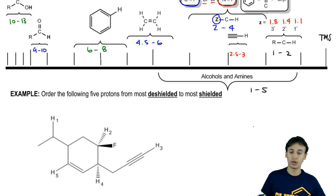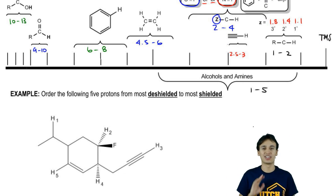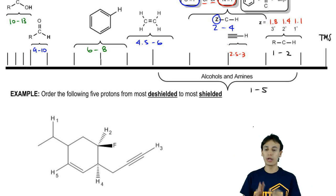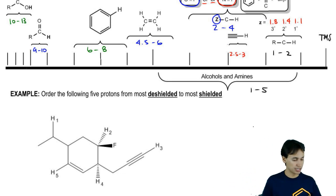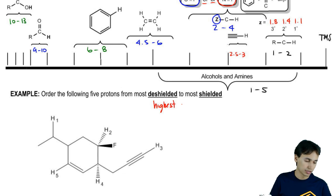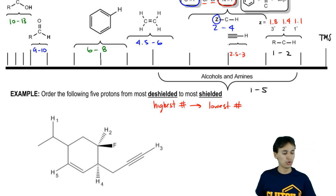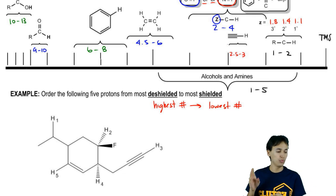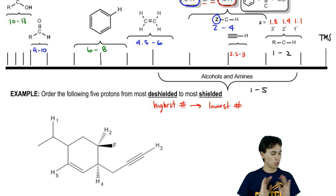Now we're going to do a practice problem. What I want you guys to do is use the definitions like an open book exam to look at this molecule and tell me what you think the ranking would be in terms of shielded to deshielded. It says order the following five protons from most deshielded - that means highest number - to most shielded, that means lowest number. Go ahead and start at the highest parts per million, the highest chemical shift, and then we can work our way down to the lowest one. Just order the protons the way you see fit and then I'll answer the question.